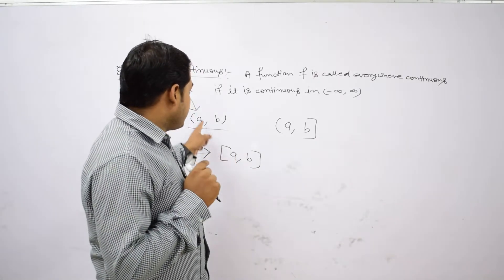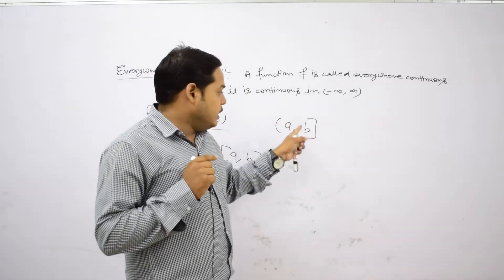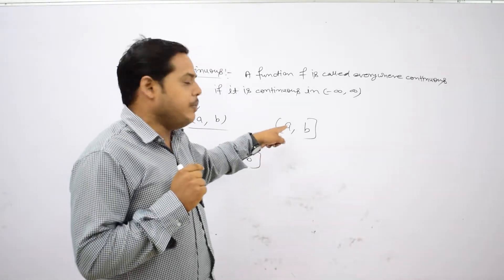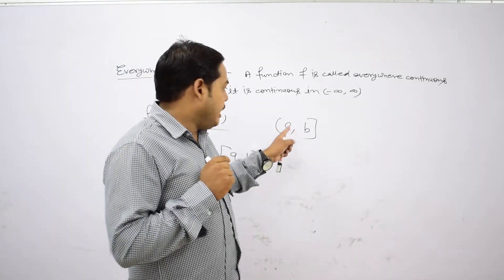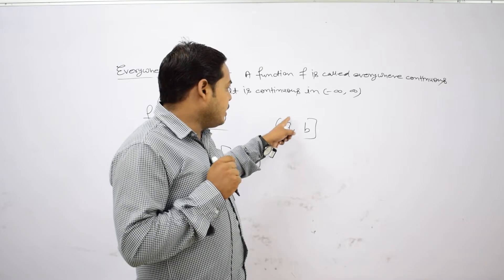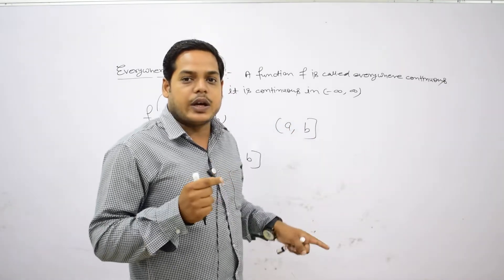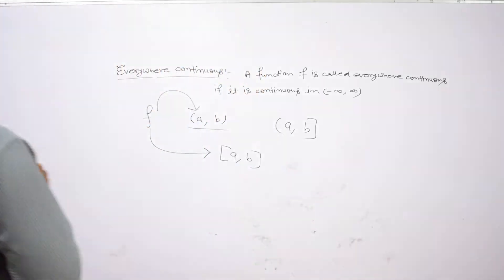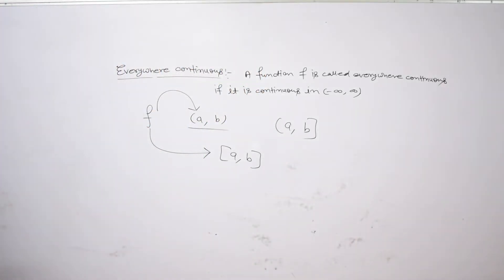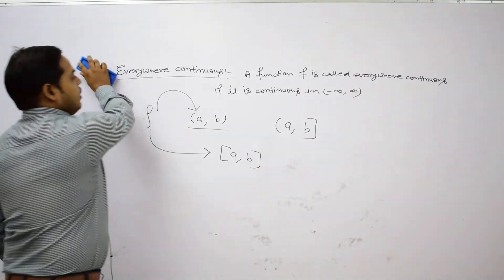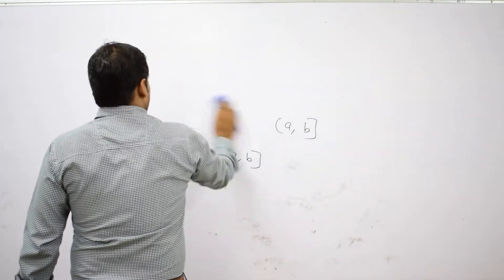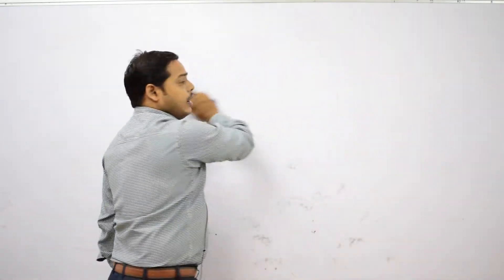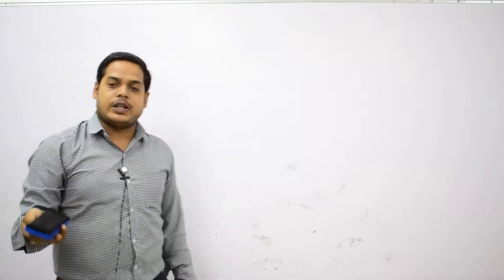If we discuss the continuity for a semi-open interval, the function is continuous in this semi-open interval if it is not continuous at a but is continuous at b and also continuous between each point of a and b. This is something about the continuity of a function.